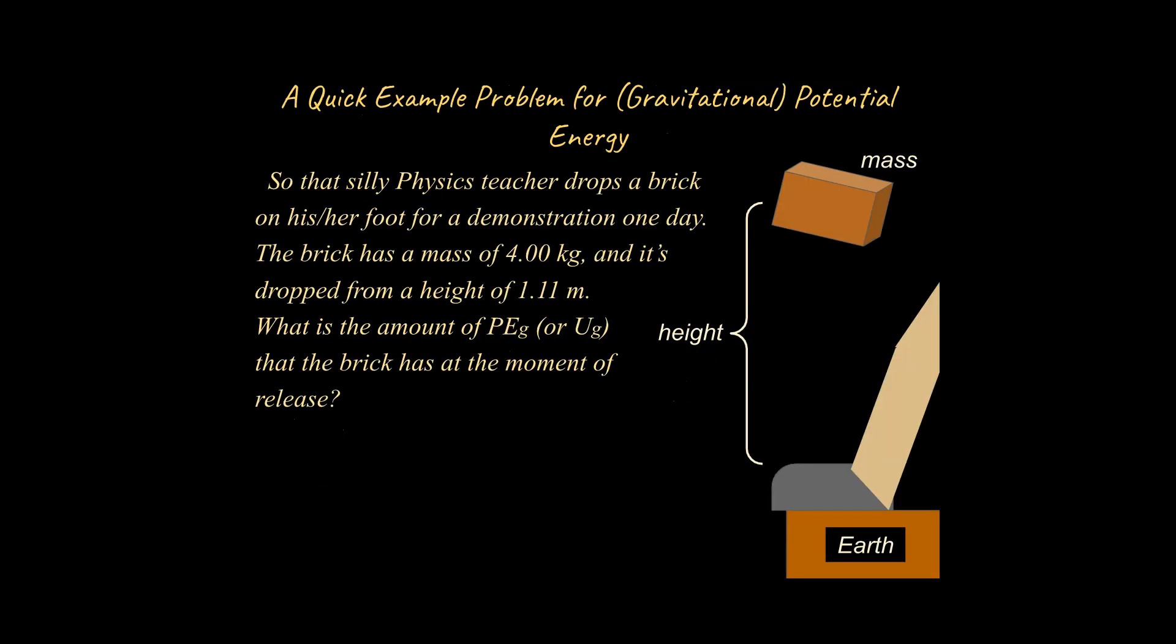And so let's do a quick example problem with some numbers here. So we're going to say the brick has a mass of 4 kilograms. It's dropped from a height of 1.11 meters. What is the amount of gravitational potential energy that the brick has at the moment of release? So we're going to use this equation, plug in our numbers, and solve. We end up with 43.6 joules.